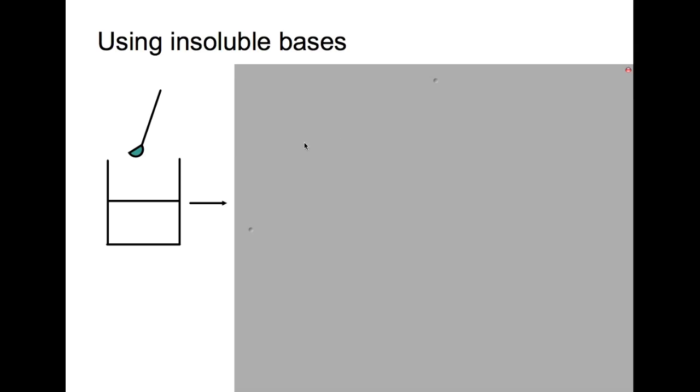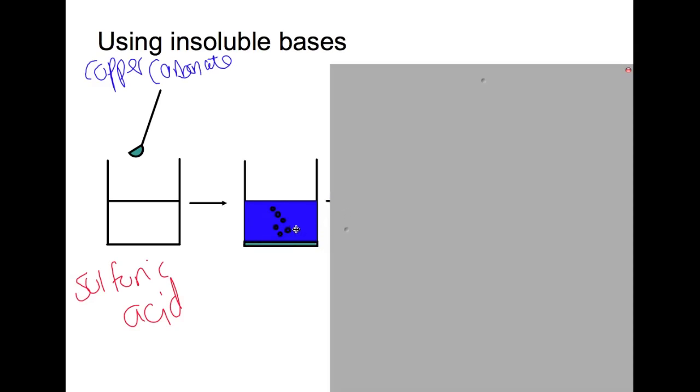However, what happens if we're using an insoluble base? So in this case we don't need to use an indicator. So in the beaker we have sulfuric acid this time. Our base is insoluble and we're using copper carbonate. Now when copper carbonate is added to sulfuric acid we get a color change and it produces blue copper sulfate which is neutral, and that's the solution. So it's in water.